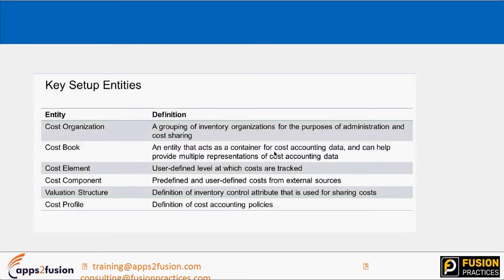Regarding cost elements — once you see the cost accounting distributions, you will understand exactly what we mean. For example, if I purchased an item with a purchase order at 10 rupees per item, plus 2 rupees for insurance and haulage charges, then in the inventory valuation and cost distributions, the 10 rupees would appear as a material cost element and the 2 rupees would come as a material overhead or a user-defined overhead element.